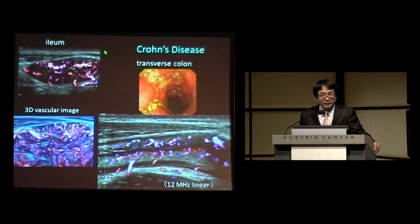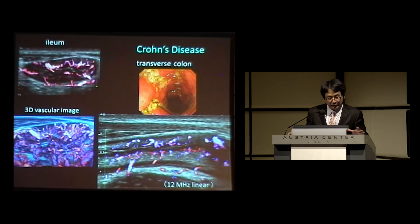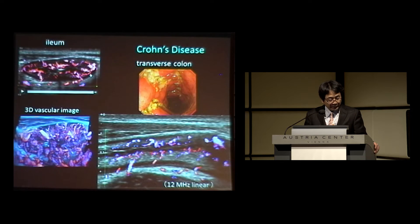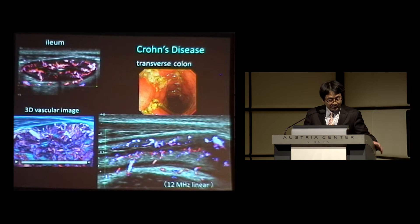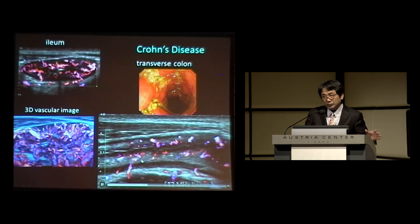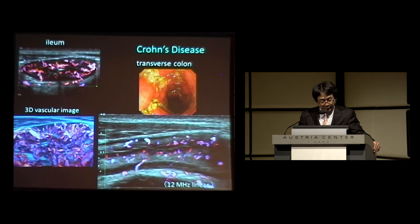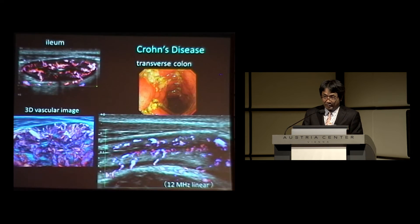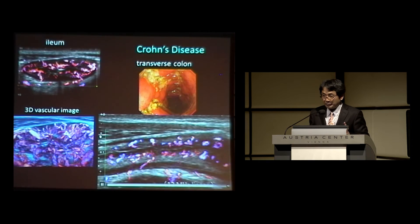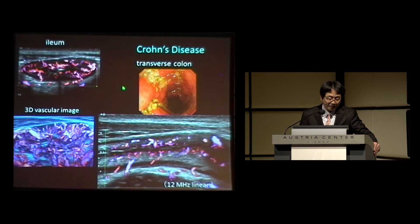The same can be applied to Crohn's disease. This is a transverse view of the ileum, and you can see hyperemia in the ileal wall — transmural hyperemia. This 3D vascular image is more visually appealing, showing the blood vessel structures inside the ileal wall. In this longitudinal view of the transverse colon, you can detect hyperemia throughout the entire bowel segment, indicating severe inflammation, which was also confirmed by endoscopy.